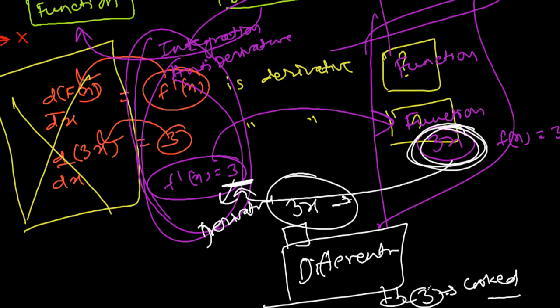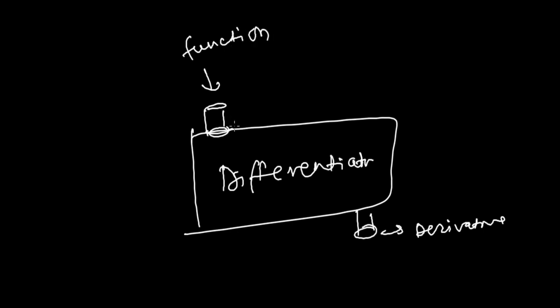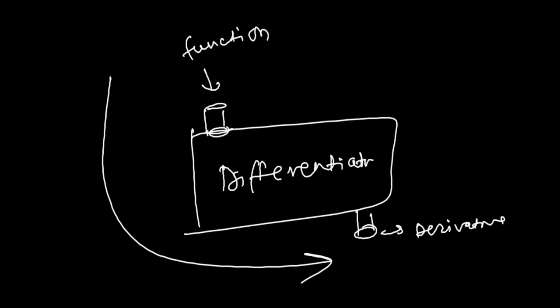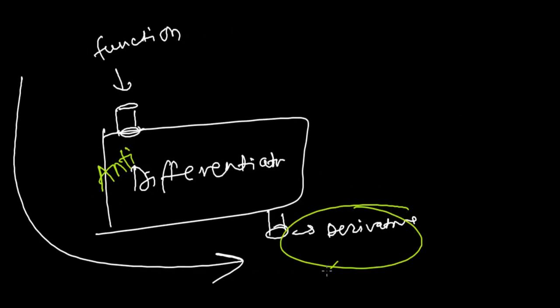So the function is the input and the derivative is the output of the differentiation machine. Now imagine an anti-differentiation machine that works in the opposite direction: you insert the derivative, and you get back the function. That's anti-differentiation, or integration. The function is called the 'primitive' because it's the original ancestor of the derivative.